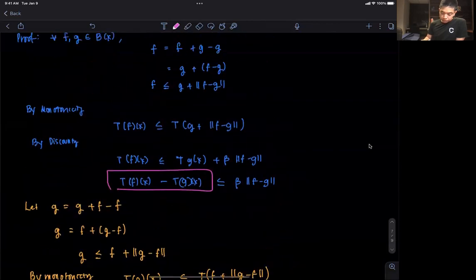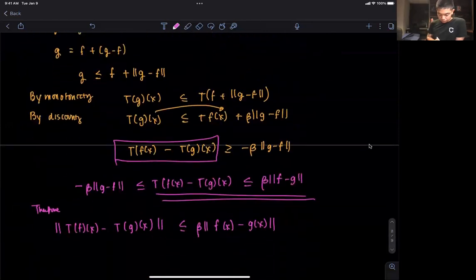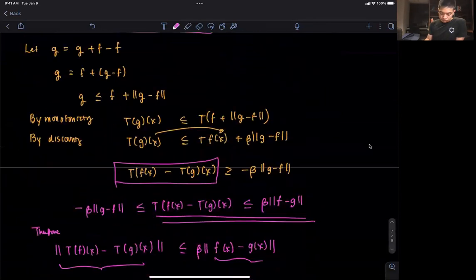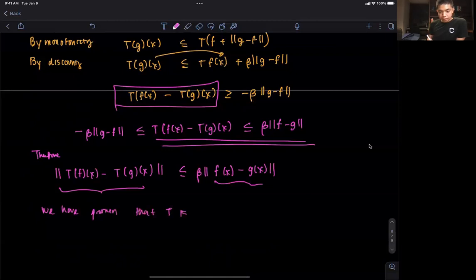But if you recall our definition of a contraction mapping, that's basically it. A norm is a notion of distance, we have the images, which are these images, and we have the points here, which are the functions f(x) and g(x). Therefore, we have proven that T is a contraction mapping. And that ends our proof.